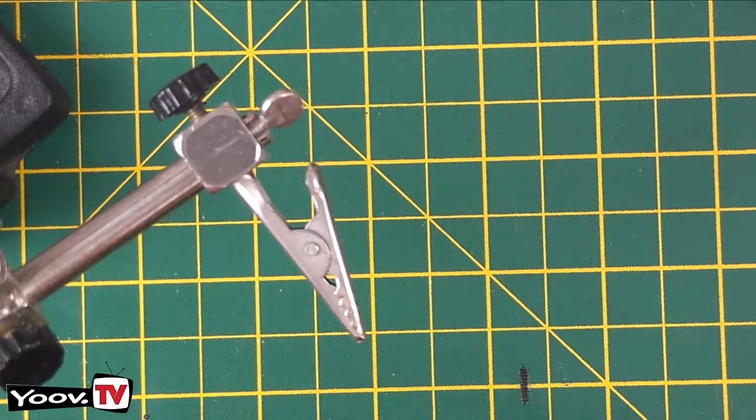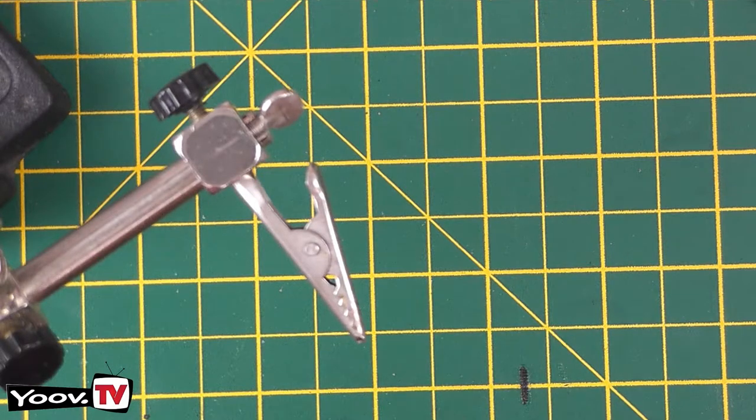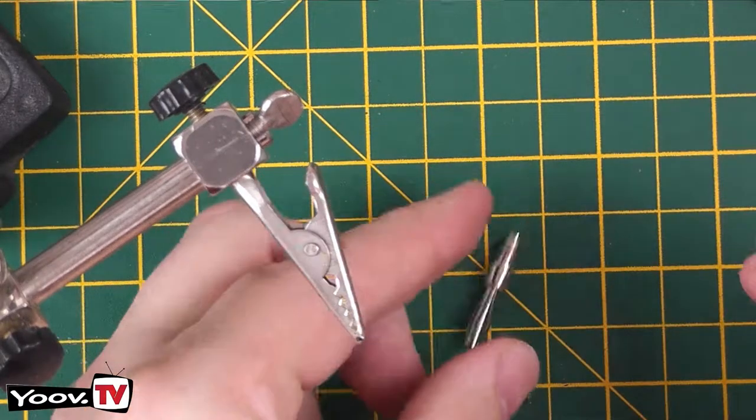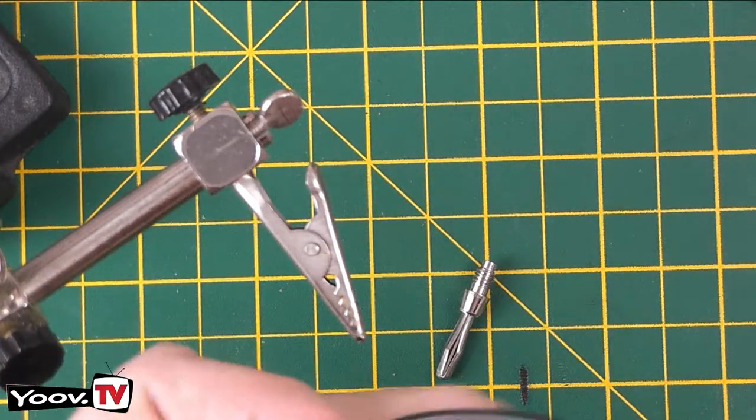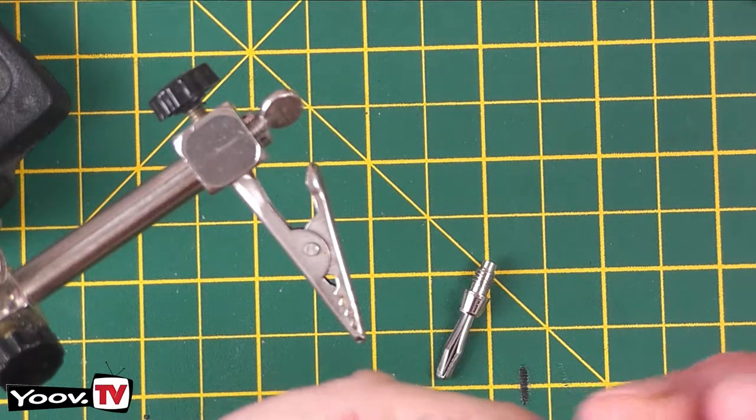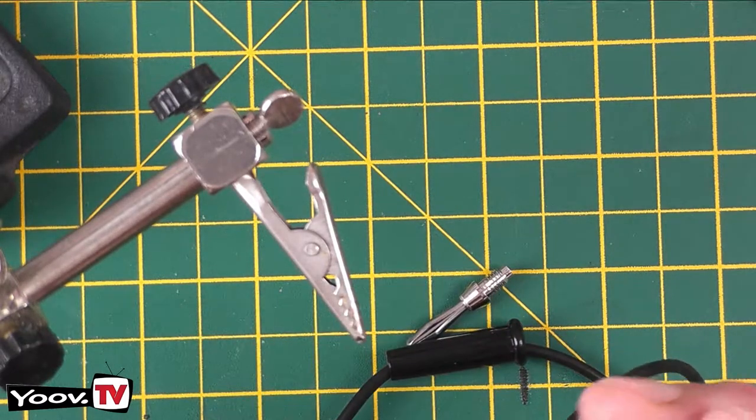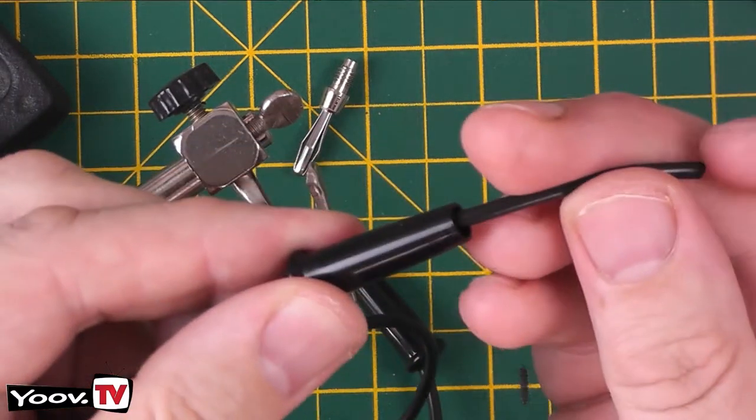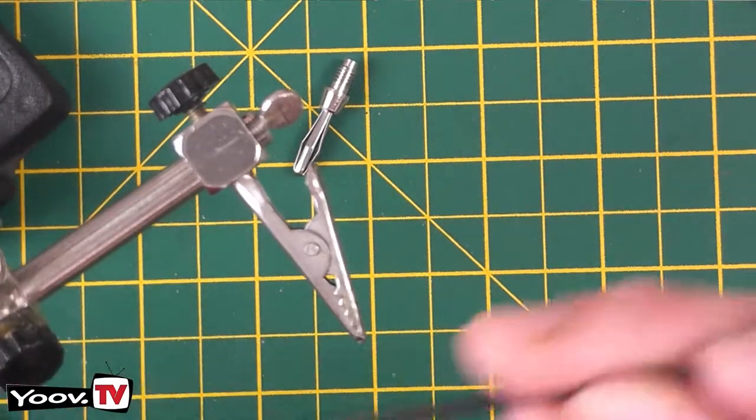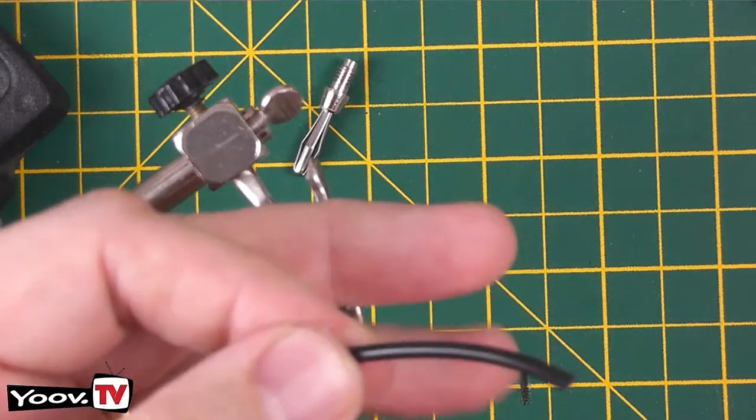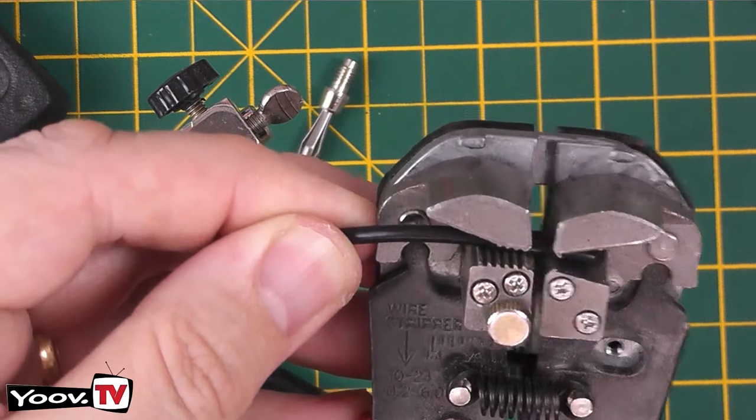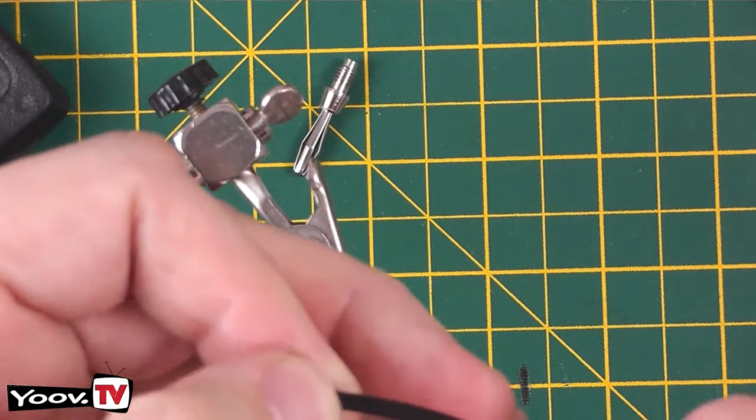So we'll do the same with the other end. Make sure your plug doesn't come off so again remove the plastic shroud sleeve whatever you want to call it put it over your wire first make sure you put the right way around so the threaded end is on the end of the wire. So again we'll strip off about a quarter of an inch and just tin that.